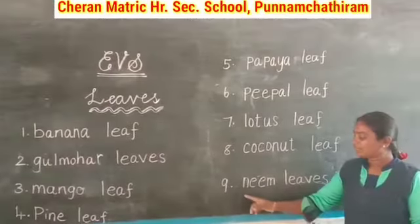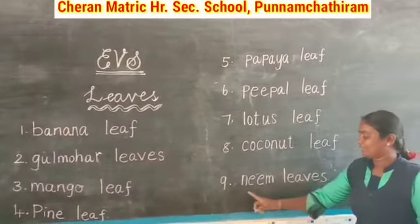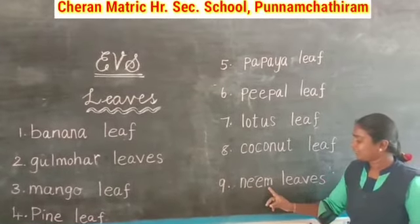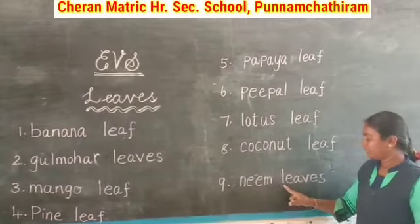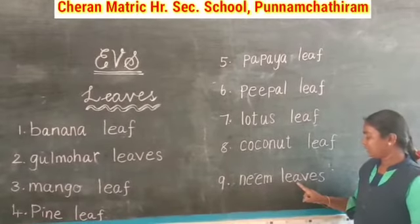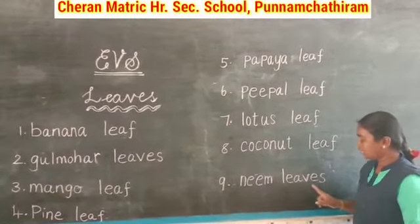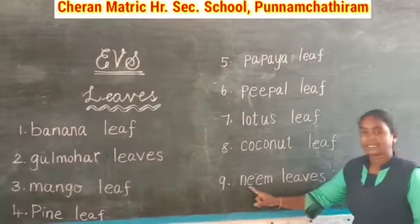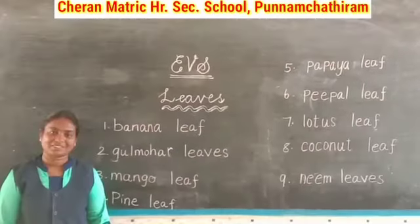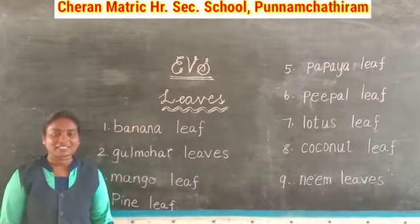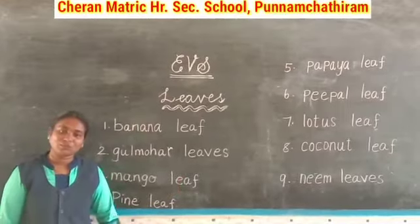The last one — neem leaves: N, E, E, M — neem. L, E, A, V, E, S — leaves. Neem leaves. Okay children, practice this lesson. Thank you.